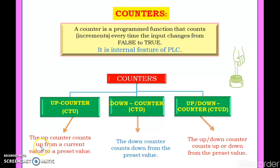What is the difference between these? An up counter counts from the current value up to the preset value. The preset value is the target count set by the operator. For example, if 10 cars are to be allowed into a parking lot, the preset value is 10. Initial value is 0; when the first car enters the count becomes 1, then 2, and so on. A down counter counts from the preset value down to 0 — starting at 10 and counting 9, 8 down to 1, then resetting to 10.